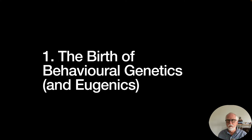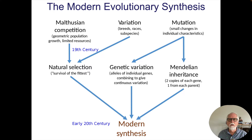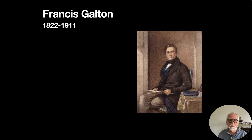Let's start with the birth of behavioral genetics and eugenics. I left you last lecture with an overall approach to how genetics came to be in the 20th century, including all the different ingredients like Mendel's inheritance methods and natural selection from Darwin. Now we can start talking about behavioral genetics.